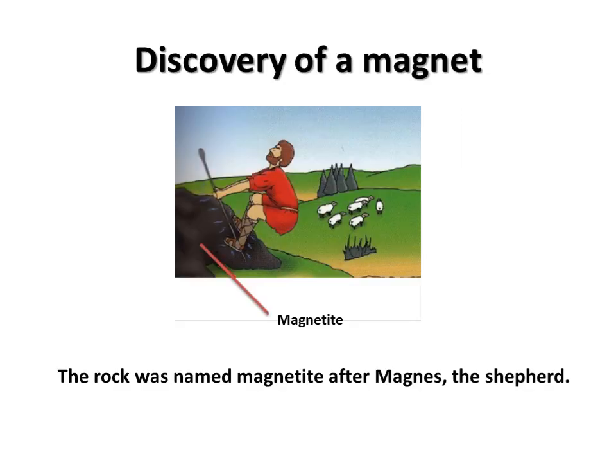Now let us see how this magnet was discovered. There is a legend about the discovery of magnets. It is said that a shepherd named Magnus lived in Greece. Once, while his sheep were grazing, he sat down on a big rock. But what a surprise he got when he tried to get up — his staff and his shoes were stuck to the rock.